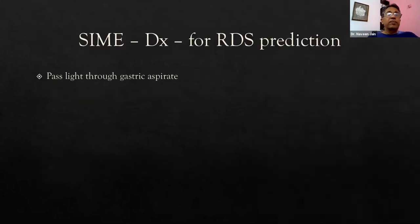Similar models have been used for RDS prediction. We learned during studies to do shake tests by shaking a test tube full of surfactant mixed with sodium hydroxide and seeing the stability of bubbles. But a simpler method is being used where you pass light through the gastric aspirate, and a mobile phone app may pick up how much light has gone through, then say how much surfactant is there and tell you the rate of RDS.